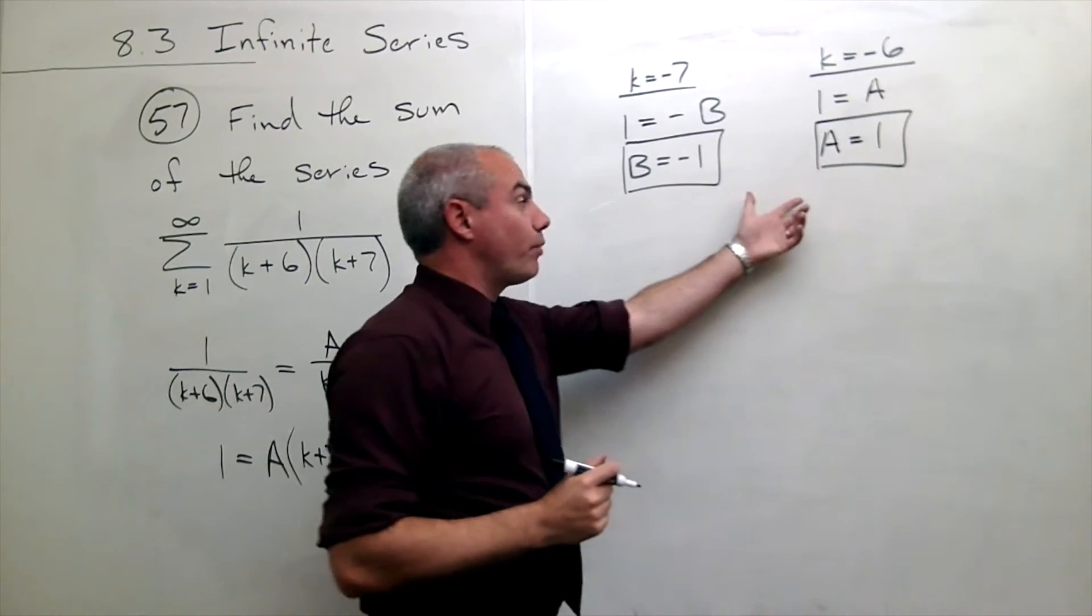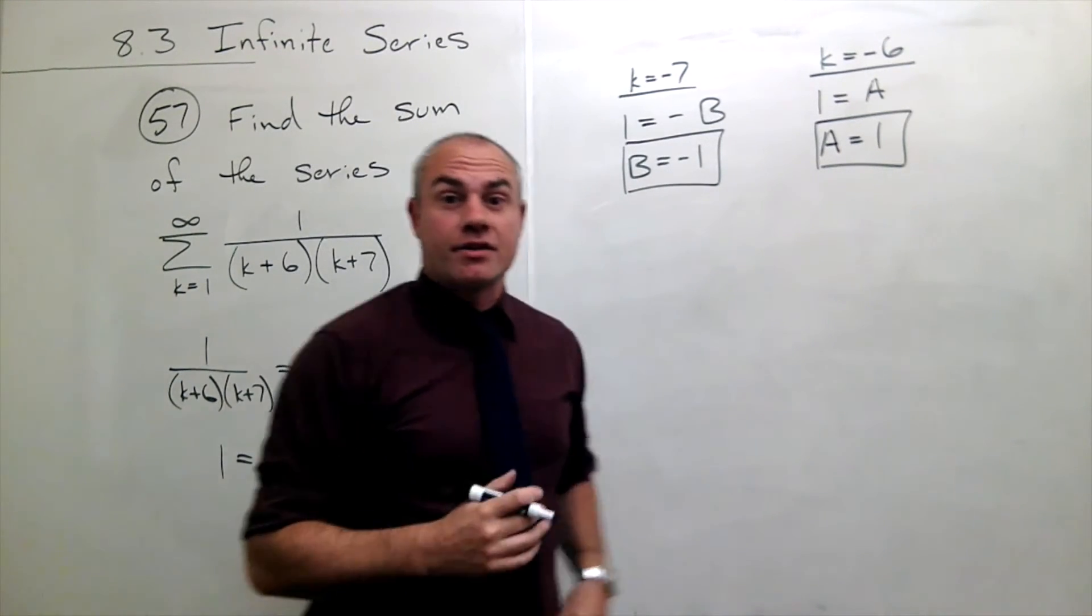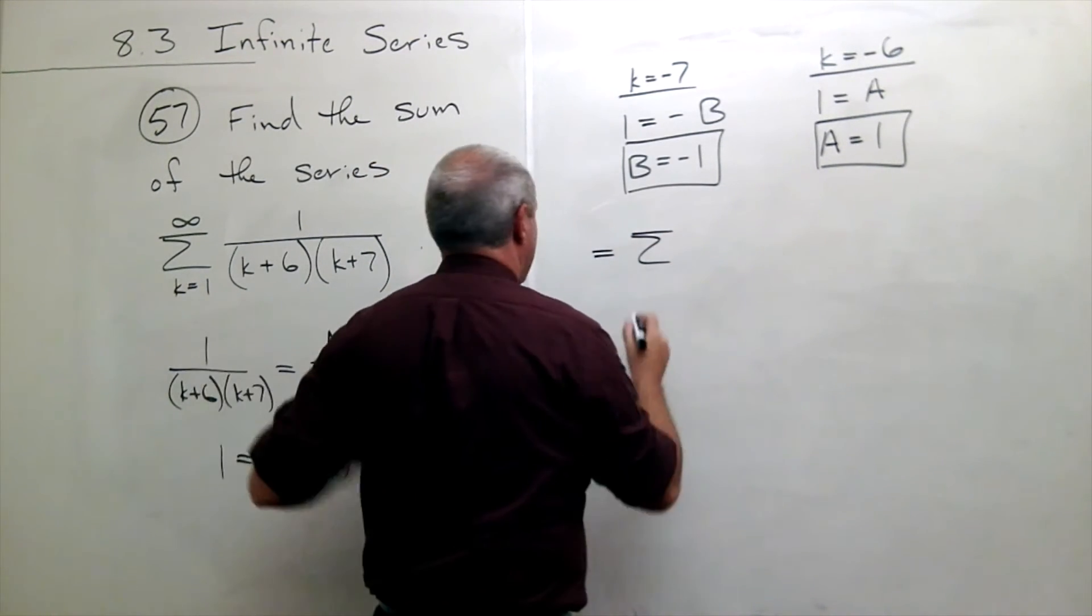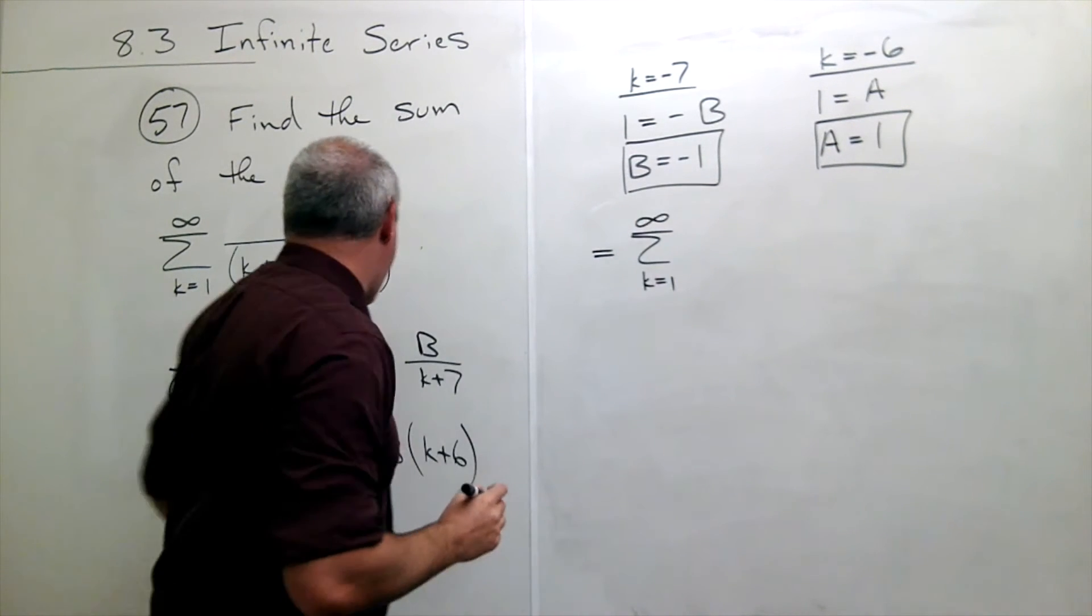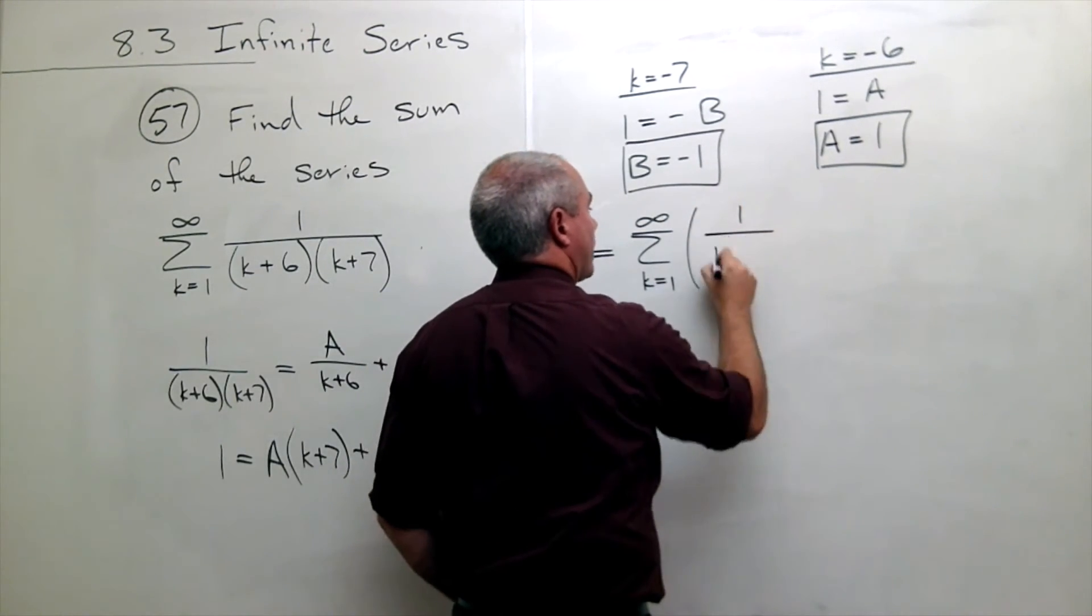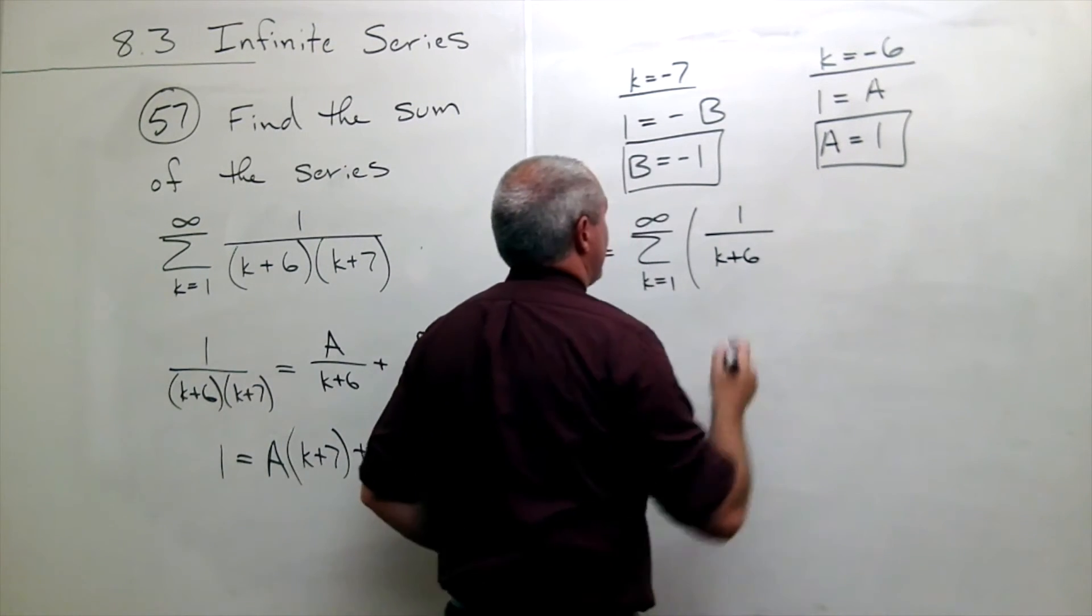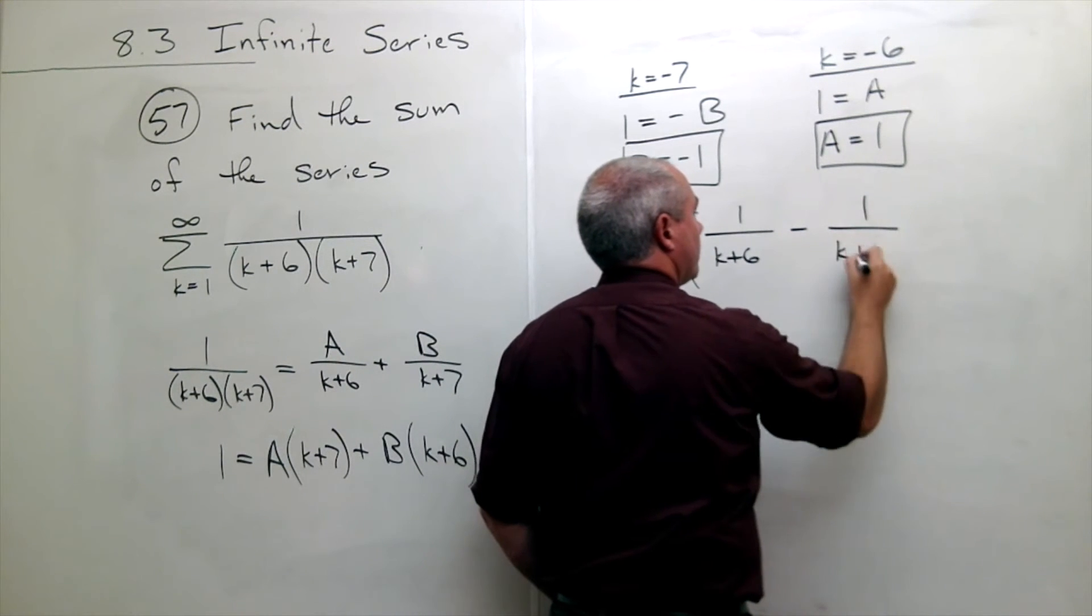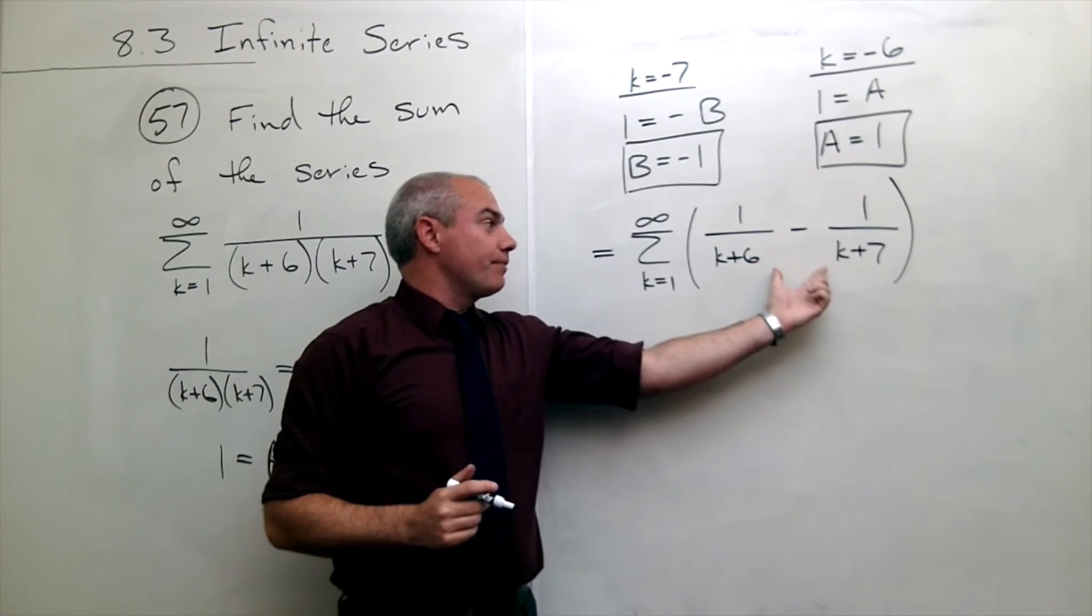Okay, so now that we've broken this thing up using partial fractions let's rewrite this series. The series now looks like this. This is the sum k going from 1 to infinity of A over (k plus 6) which is 1 over (k plus 6) then plus B over (k plus 7) but B is negative 1 so minus 1 over (k plus 7). Now this is something I can work with.